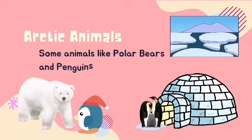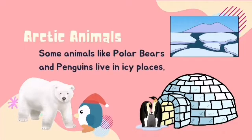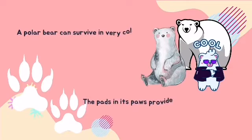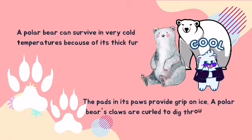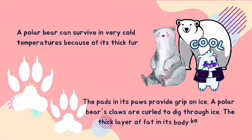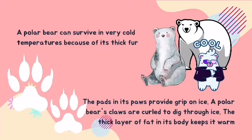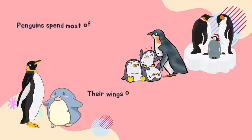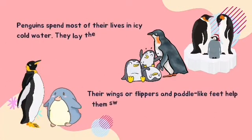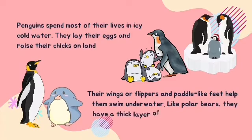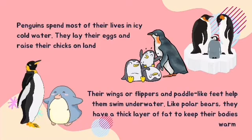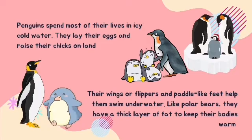Some animals like polar bears and penguins live in icy places. A polar bear can survive in very cold temperatures because of its thick fur. The pads on its paws provide grip on ice, and its claws are curved to dig through ice. The thick layer of fat in its body keeps it warm. Penguins spend most of their lives in icy cold water but lay their eggs and raise their chicks on land. Their wings are flippers, and paddle-like feet help them swim underwater. Like polar bears, they have a thick layer of fat for keeping their bodies warm.